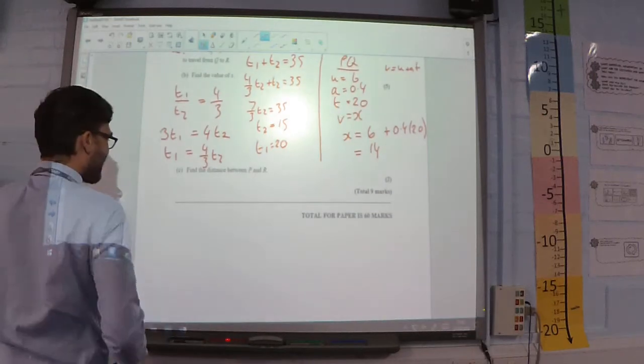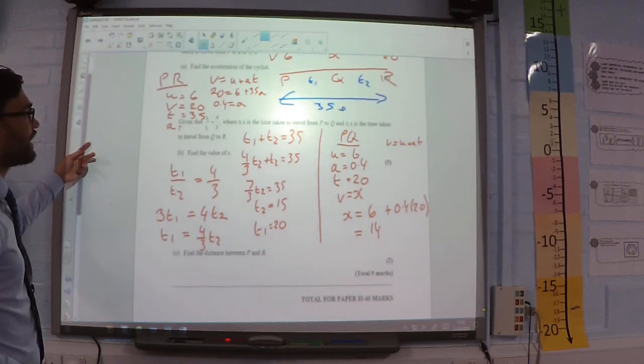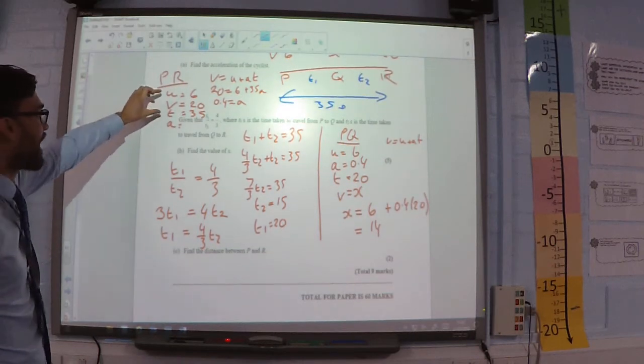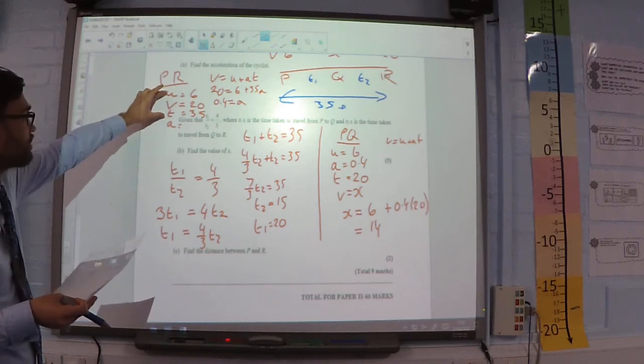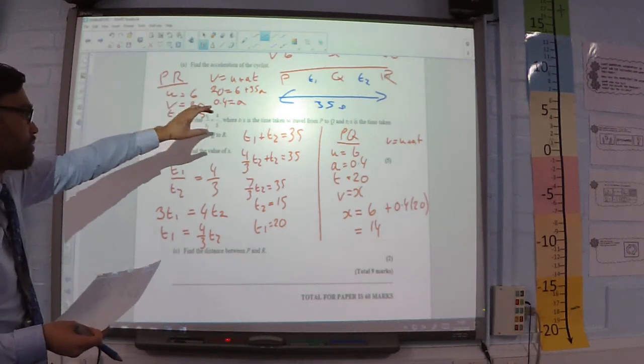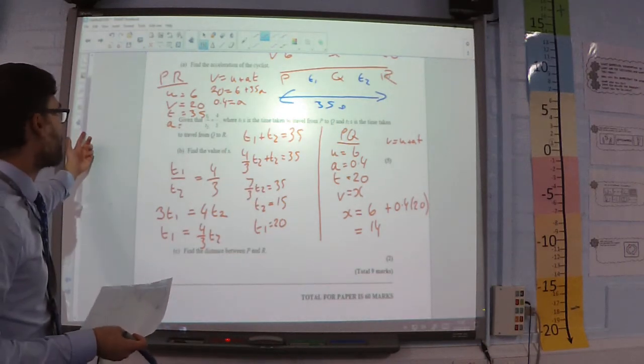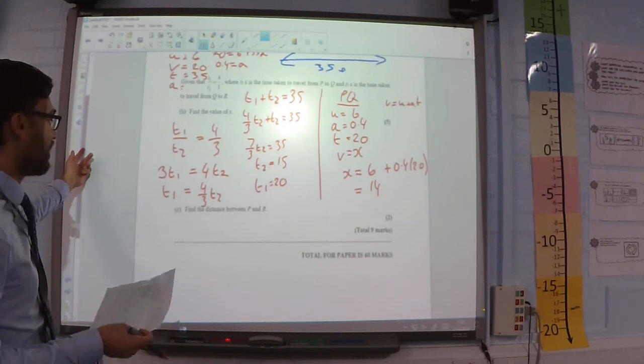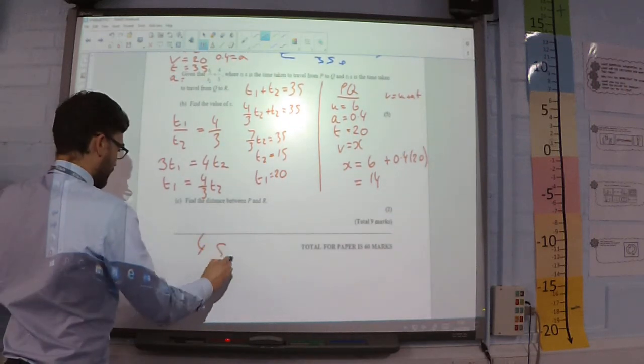Part C. Find the distance between P and R. So, for P to R, I have enough information that I can just use SUVAT. I know what the acceleration is now. So, it's not going to be too tricky just to substitute that in and get 455 meters.